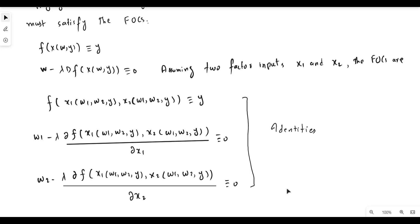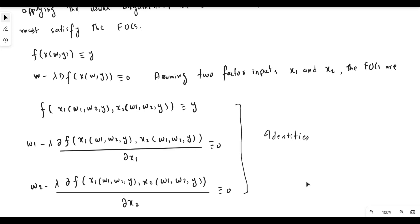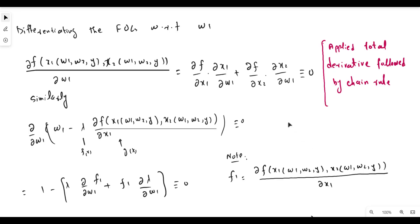For comparative statics, we assume the price of a factor input changes. Suppose w1 changes — what will happen to the first-order conditions? Allowing w1 to change gives us the comparative statics of cost minimization. We take the derivative of these three identities with respect to w1.